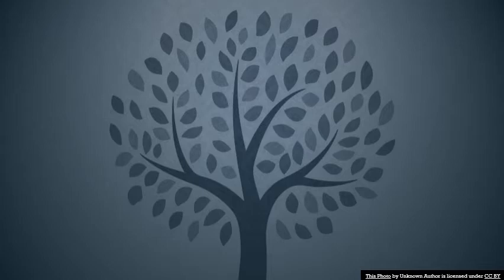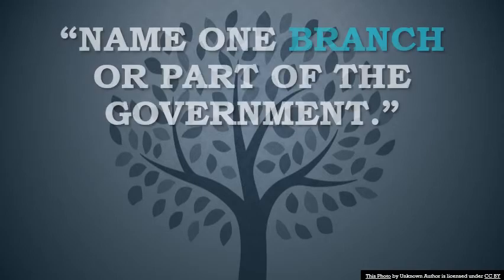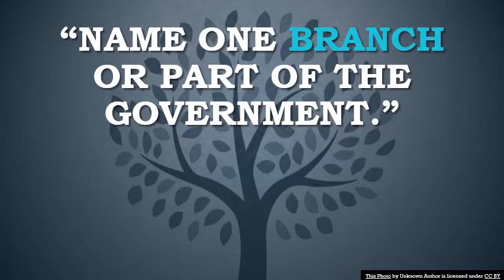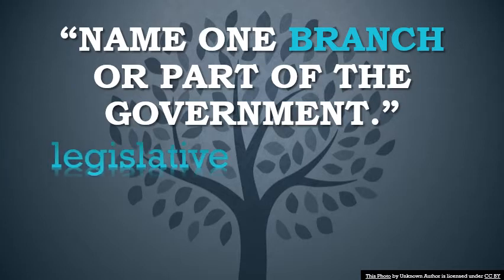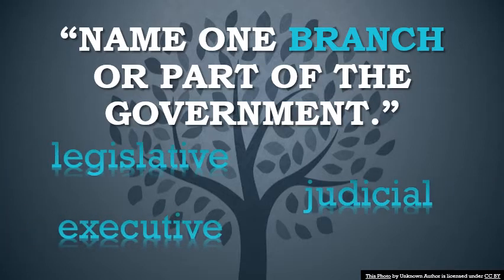So try and answer this official USCIS question for me: Name one branch or part of the government. As you can see in the text, you only have to know one. But I'm going to give you all three branches now. They are the legislative branch, judicial branch, and executive branch.